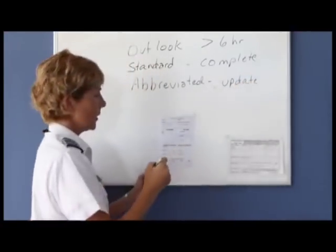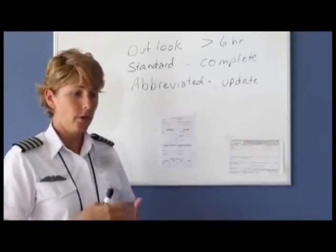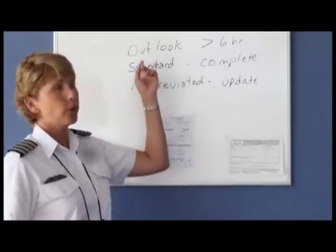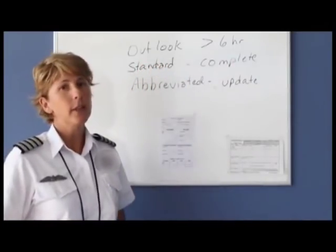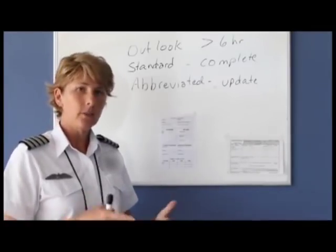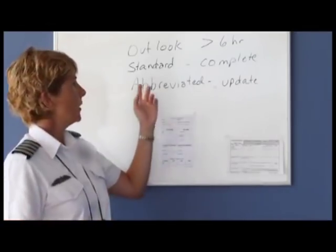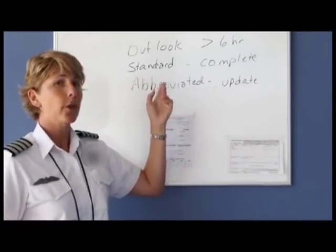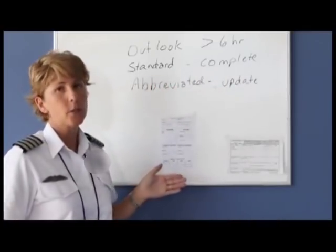Here's how it works: say you have a flight tomorrow morning and you want to know the weather tonight. You'd call and ask for an outlook briefing because your flight is more than six hours in advance. They'll give you a general picture of the weather, but can't give fine details since it's not current enough. Then the next morning when you're ready to make your flight plan, you'd ask for a standard weather briefing where they give you all the detailed information.